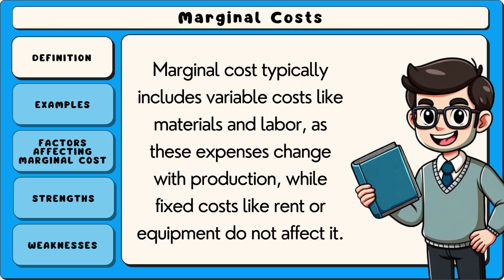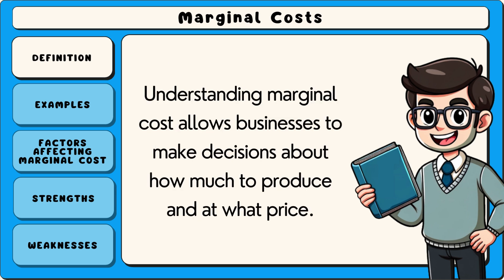Marginal cost typically includes variable costs like materials and labour, as these expenses change with production, while fixed costs like rent or equipment do not affect it. Understanding marginal cost allows businesses to make decisions about how much to produce and at what price.